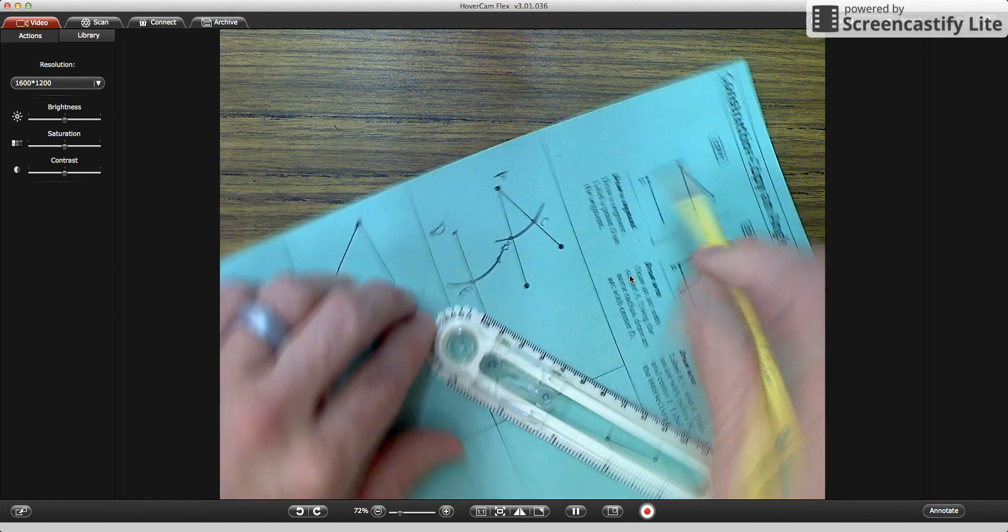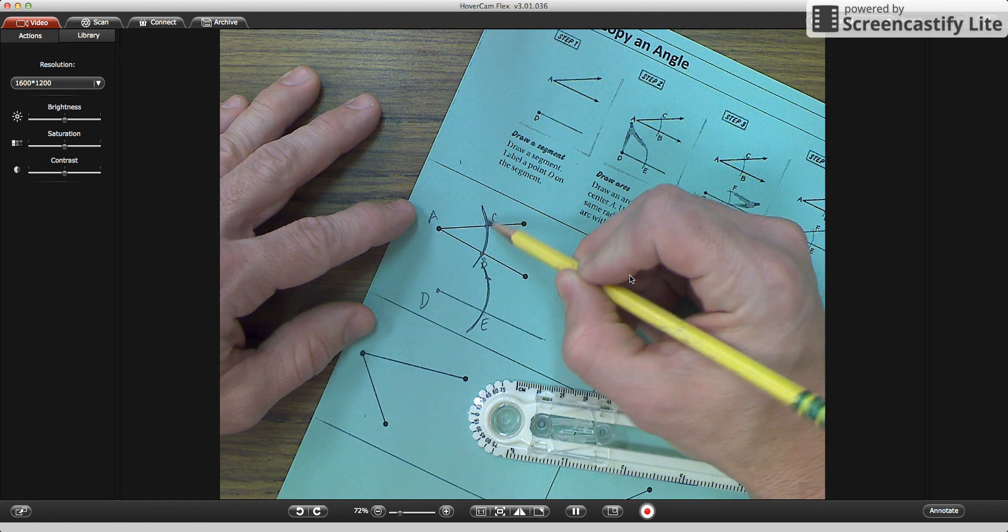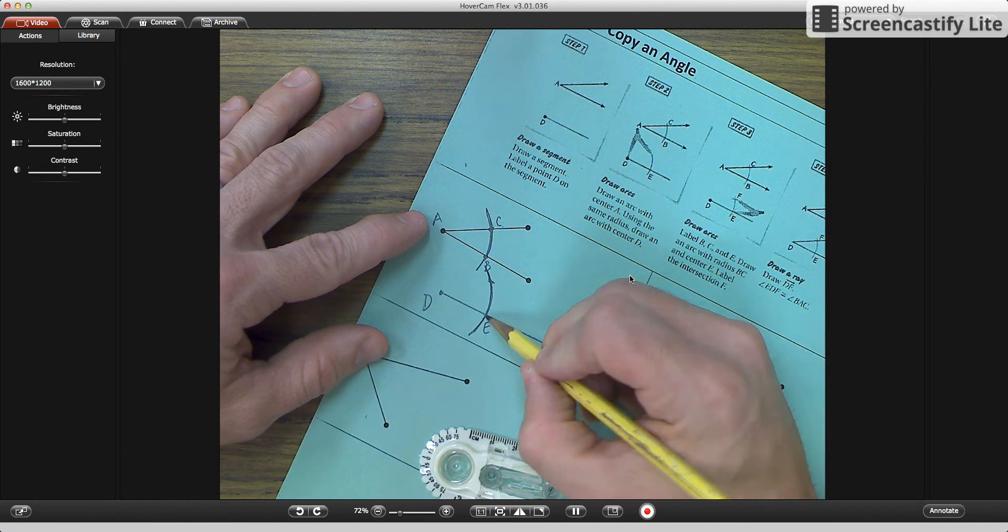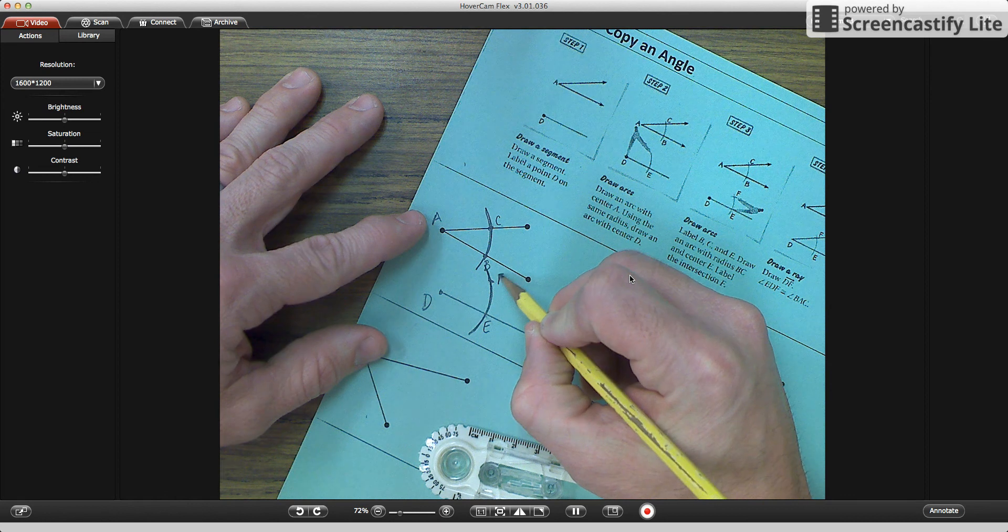So now we have the same distance from C to B as we do from E, and I'm going to call this F.